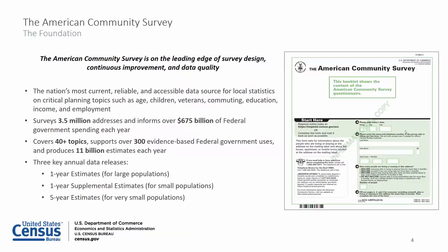Example programs that use Census Bureau data to determine funding include the U.S. Department of Agriculture, which uses the data for the Supplemental Nutrition Assistance Program, the National School Lunch Program, and Special Supplemental Nutrition Program for Women, Infants and Children. The Department of Health and Human Services uses the data for the Medical Assistance Program, Temporary Assistance for Needy Families, and Head Start Program. The Department of Housing and Urban Development uses the data for their community development block grant program and public housing capital fund. And the Department of Transportation uses the data for highway planning and construction and federal transit formula grants.